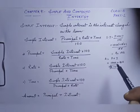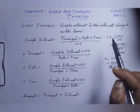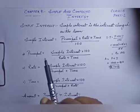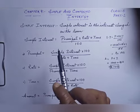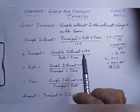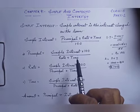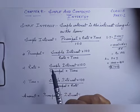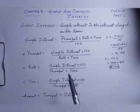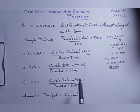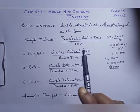Using this formula we can find simple interest as well as the amount. If we have to find Principal, then Principal = SI × 100 upon Rate × Time. If we have to find Rate, then Rate = SI × 100 upon Principal × Time. And if we have to calculate Time, then Time = SI × 100 upon Principal × Rate.